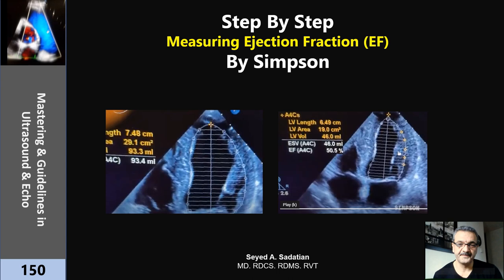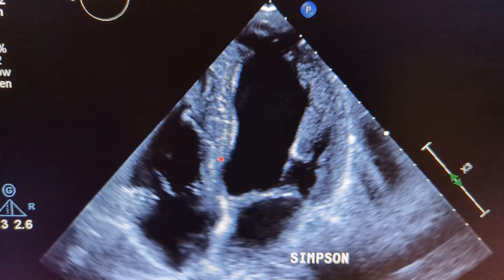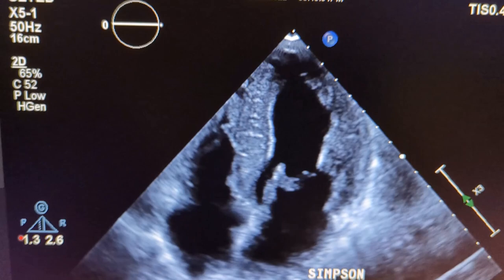Little by little I will upload these. I noticed even experienced techs, for some reason, have missed those tips and tricks or forgotten them. I'm going to go through those important measurements step by step and how we do them. I'll start with the Simpson method — later we'll come back with others. To do the Simpson, you have to get the correct apical four-chamber view, which I explained in another clip — go check it out.